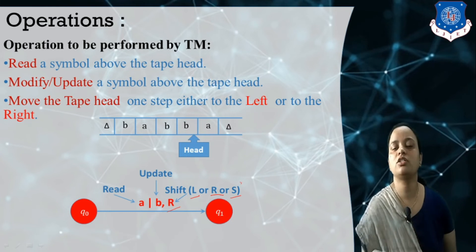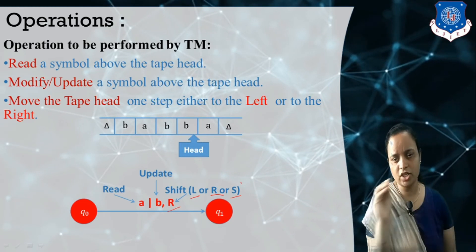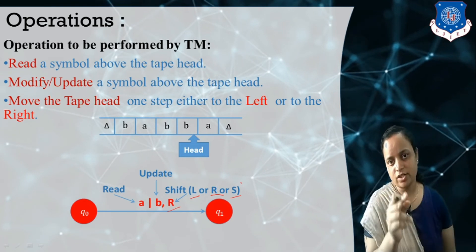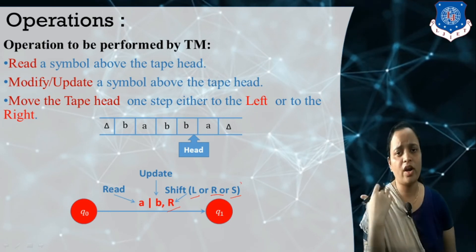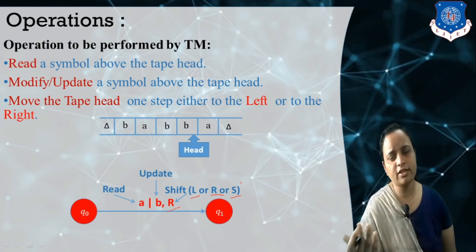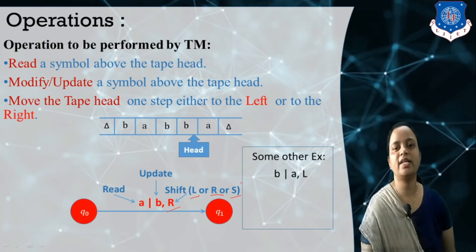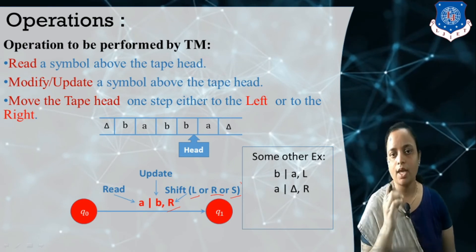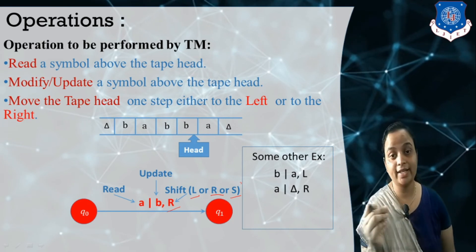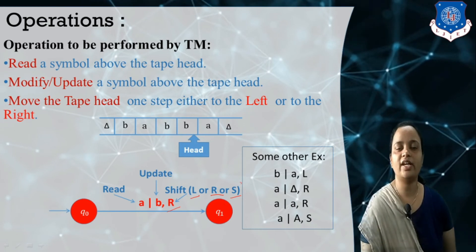In this way we write down the transitions for the Turing machine. In a transition we mention: first the input symbol, then after a slash, which symbol we are going to write on that position — either keeping the same symbol or updating it — and then the direction. For example, B slash A L means: reading input symbol B, writing A in its place, then moving left. Another example: A slash delta R means reading A, replacing it with delta (deleting it), and moving right.